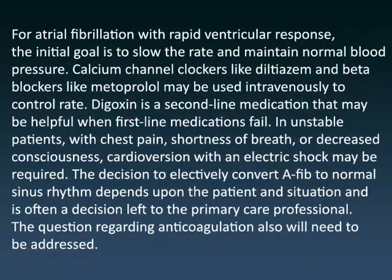For atrial fibrillation with rapid ventricular response, the initial goal is to slow the rate and maintain normal blood pressure. Calcium channel blockers like diltiazem and beta blockers like metoprolol may be used intravenously to control rate. Digoxin is a second-line medication that may be helpful when first-line medications fail. In unstable patients with chest pain, shortness of breath, or decreased consciousness, cardioversion with an electric shock may be required. The decision to electively convert AFib to normal sinus rhythm depends upon the patient and situation and is often left to the primary care professional. The question regarding anticoagulation also will need to be addressed.